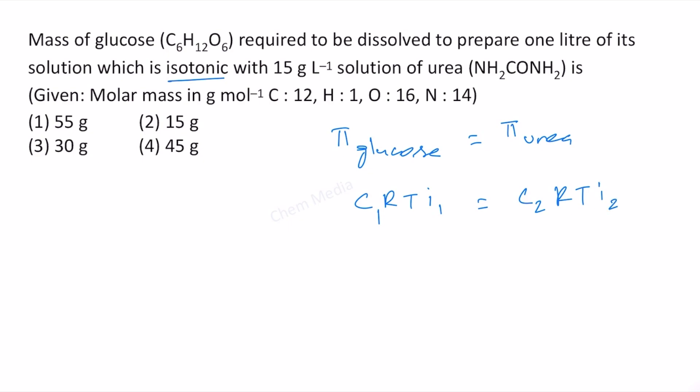In this case, both glucose as well as urea are non-electrolytes, and therefore i₁ as well as i₂ are equal to one.